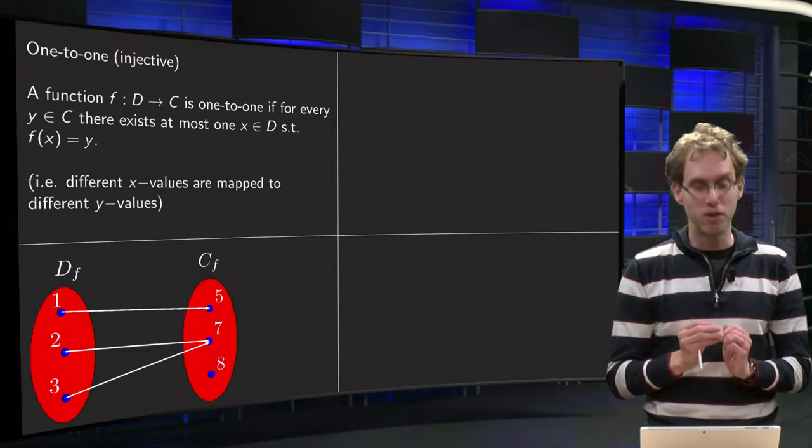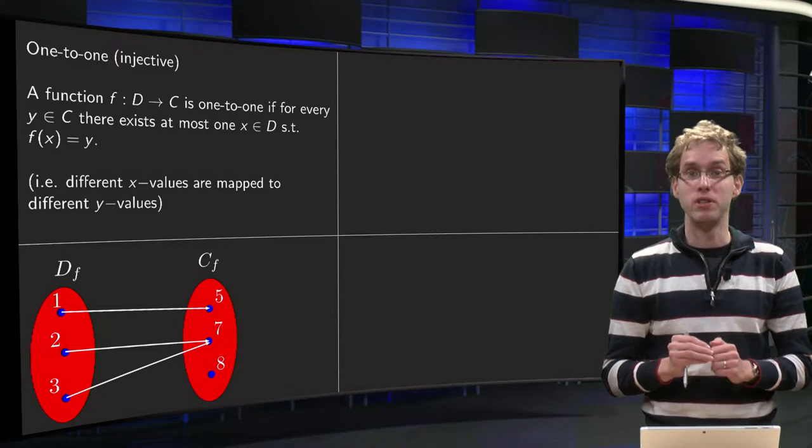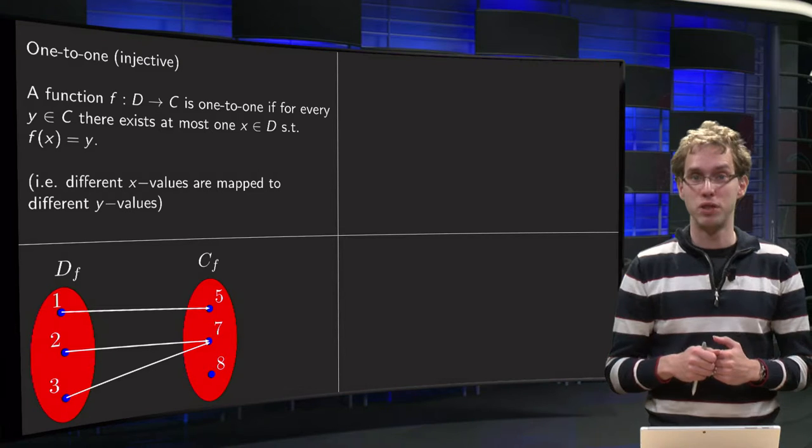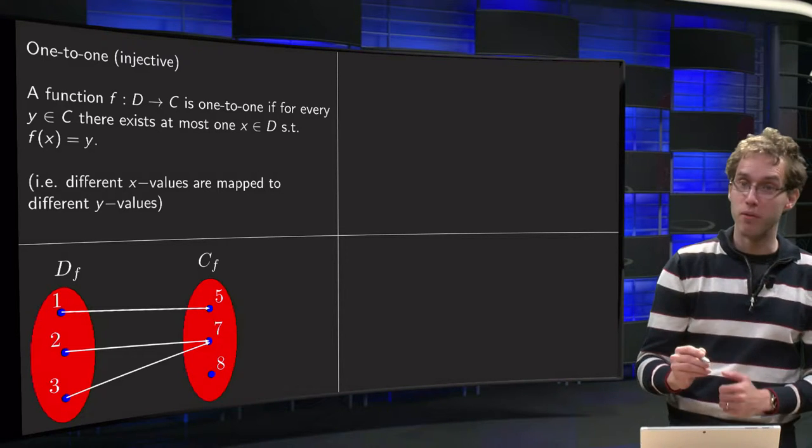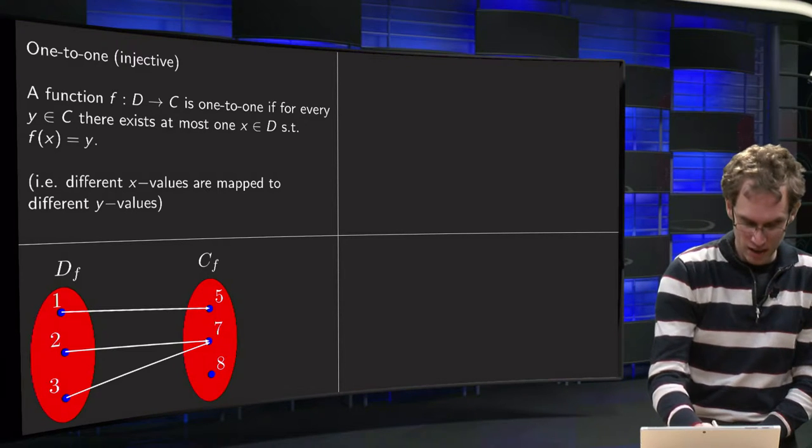We have our domain consisting of three points, our codomain consisting also of three points, and we wonder whether this function f is one-to-one or not. Well, we start, we look from the codomain back to the domain, so we start, say, with the eight over here.